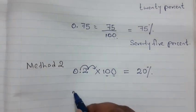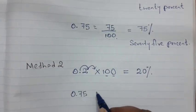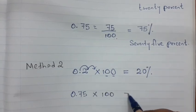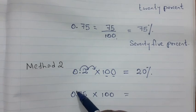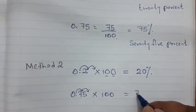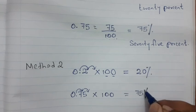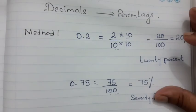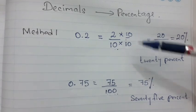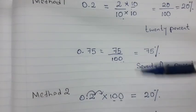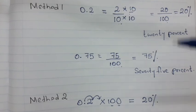For the second example, 0.75, multiply by 100 by moving the decimal point 2 places forward. So 0.75 becomes 75%. This method has just one step. You can choose either Method 1 or Method 2 — whichever is easier for you. Remember there are 2 methods for converting decimals to percentages.